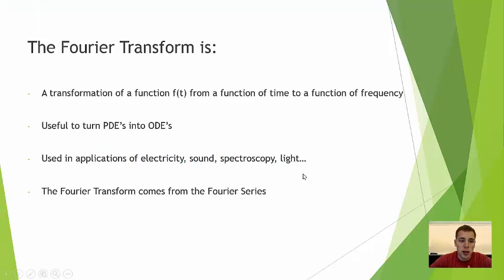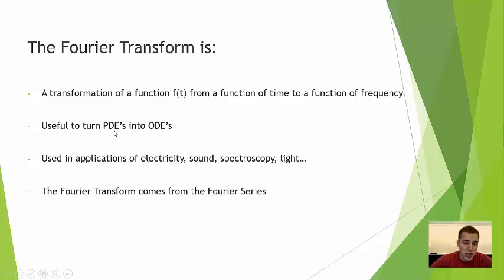To begin with some preliminary information, the Fourier transform is a transformation of a function f of t from a function of time to a function of frequency. The usefulness of the Fourier transform is that it allows us to transform partial differential equations into ordinary differential equations — PDEs into ODEs. This is helpful in real applications in electricity, sound, spectroscopy, and light. Anything that has waveforms or general functions that are difficult to evaluate, we can use the Fourier transform to come up with a more simple solution.